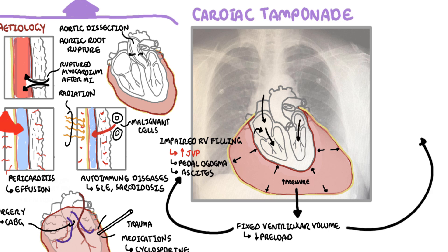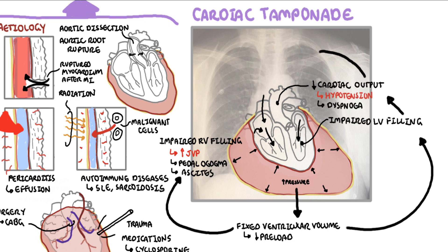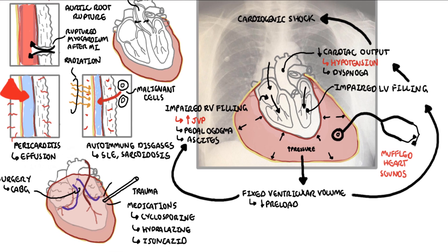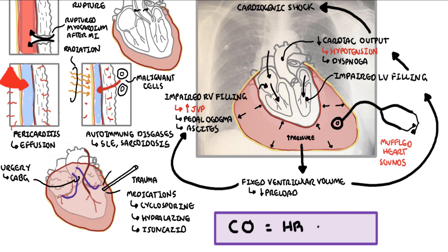Cardiac tamponade also results in impairment of left ventricular filling, causing left-sided heart failure — essentially a decrease in cardiac output. A decrease in cardiac output causes low blood pressure and dyspnea, and a significant decrease causes shock, in this case obstructive or cardiogenic. Heart sounds are muffled due to the fluid around the heart. Importantly, cardiac output equals heart rate multiplied by stroke volume. Preload, afterload, and contractility are all determinants of stroke volume. A reduced preload, as seen in cardiac tamponade, causes a reduced stroke volume and thus a decreased cardiac output.